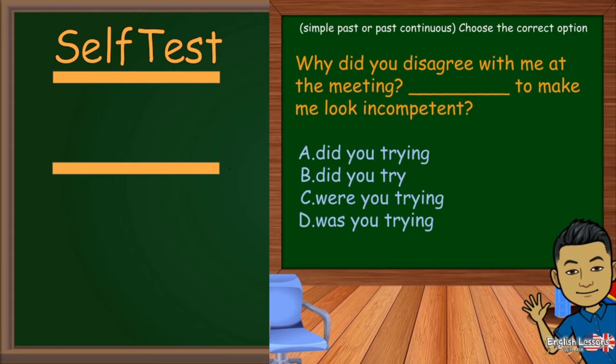Time to practice. Choose the correct option. Why did you disagree with me at the meeting? To make me look incompetent? Option A: Did you try? B: Did you try? C: Were you trying? D: Was you trying?